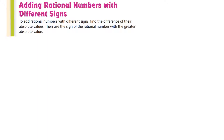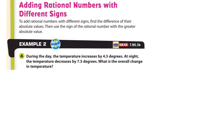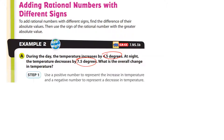Adding rational numbers with different signs. During the day the temperature increases by 4.5 degrees — it goes up. At night the temperature decreases by 7.5 degrees — it goes down. Positive numbers represent the increase in temperature and negative numbers represent the decrease.